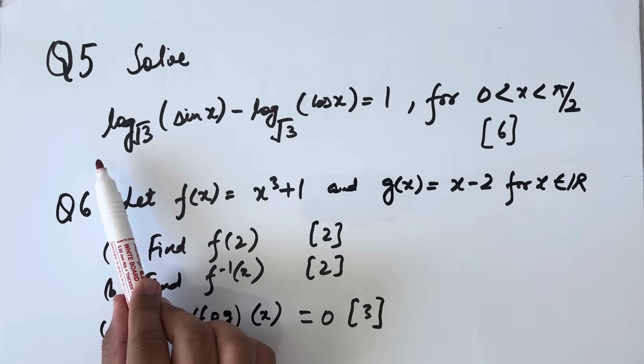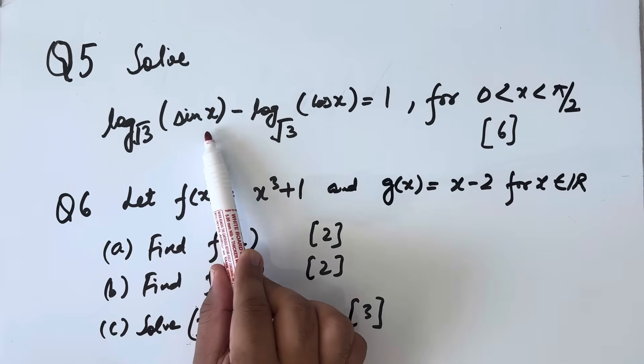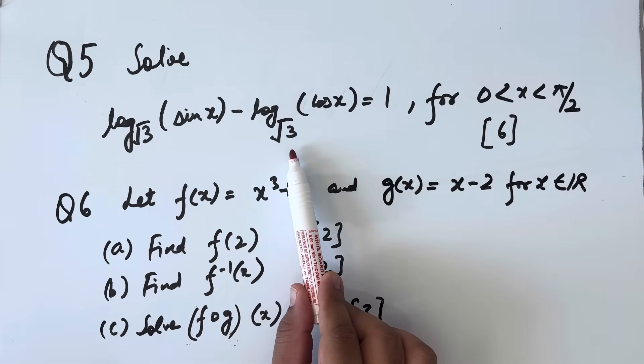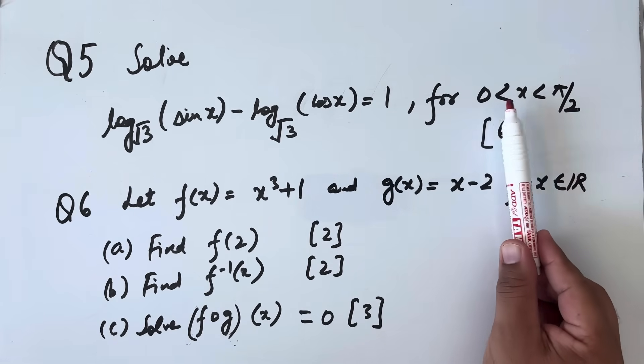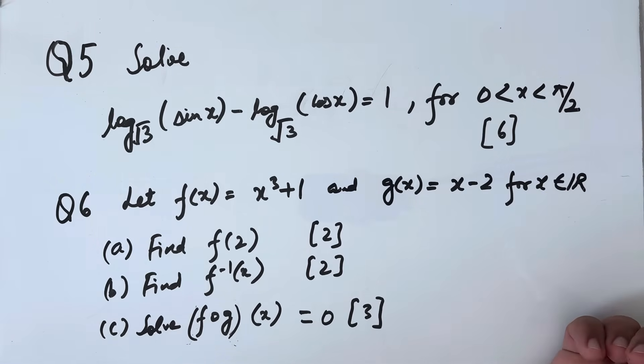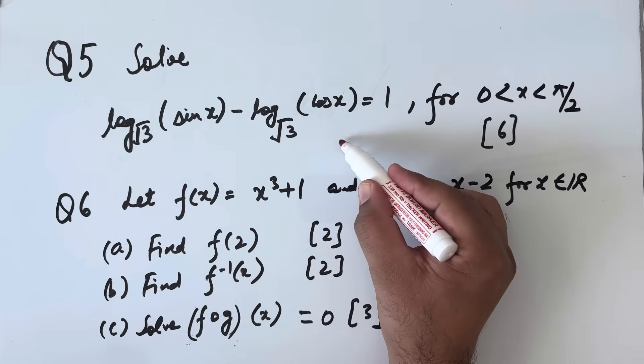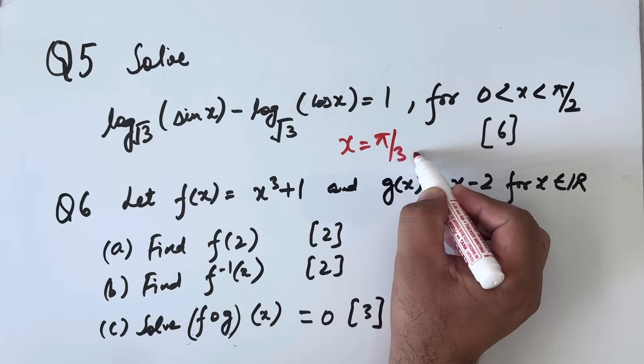Question number 5: Solve log base √3 of sin x minus log base √3 of cos x equals 1 for x lies between 0 and π/2. Answer to this question will be x equals π/3.